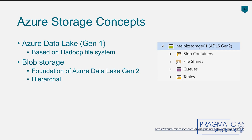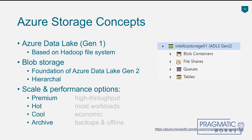Blob containers are the most flexible. You also have different scale and performance options, which include premium or high-throughput storage at a higher cost. For most workloads, you can use hot storage. For the most economical option where performance is less critical, you can use cool storage. And when you just need to archive data that you only access occasionally or on demand, there is also the cheaper archive option for backups and offline storage.